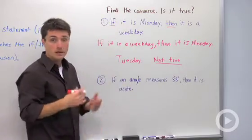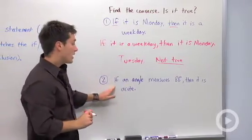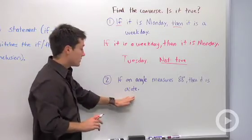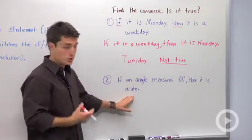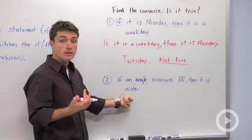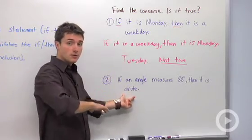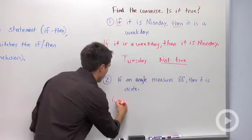Let's look at one more and apply it to geometry. If an angle measures 88 degrees, then it is acute. Well, that's true. By definition, an acute angle is any angle that measures less than 90 degrees but more than zero degrees. So let's find our converse.